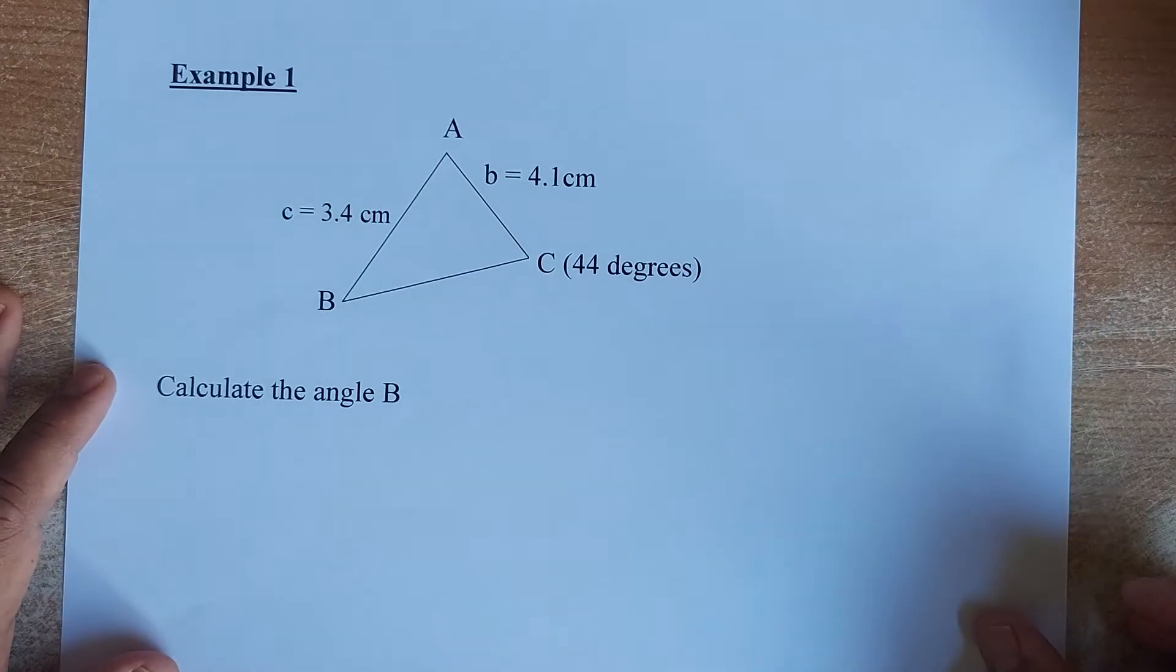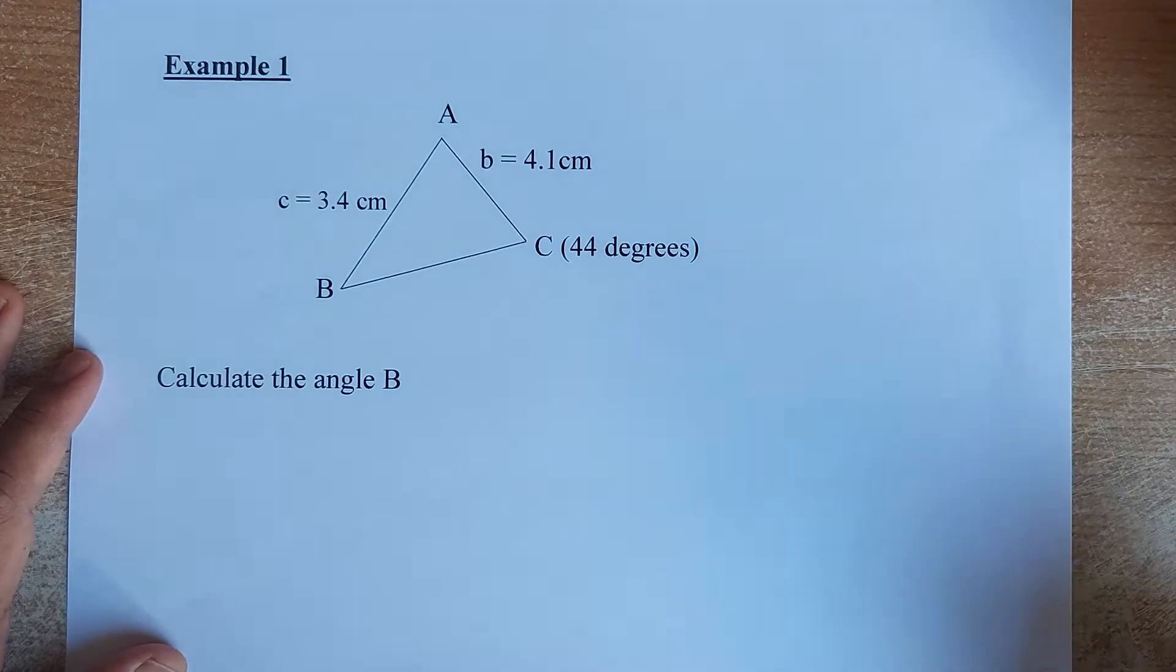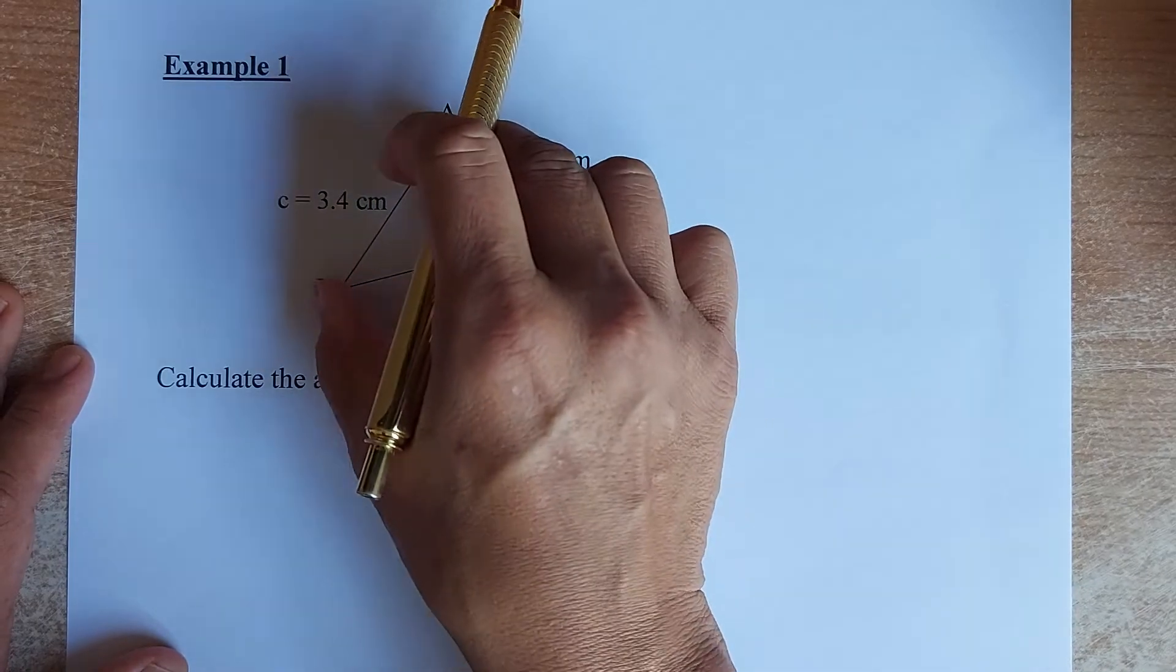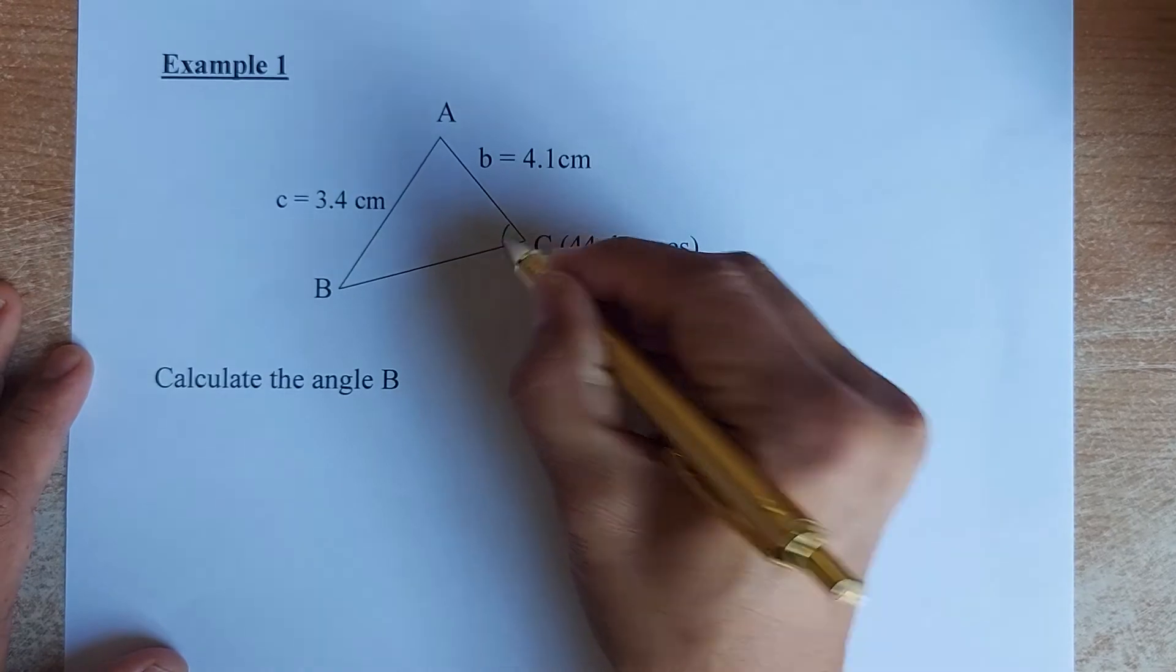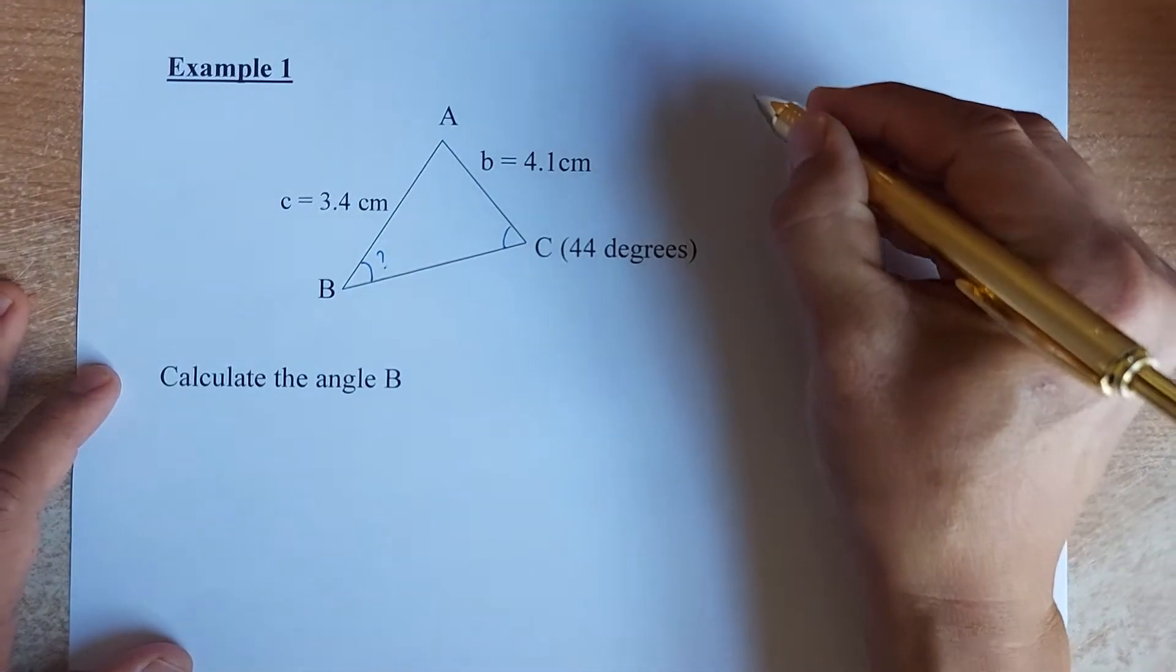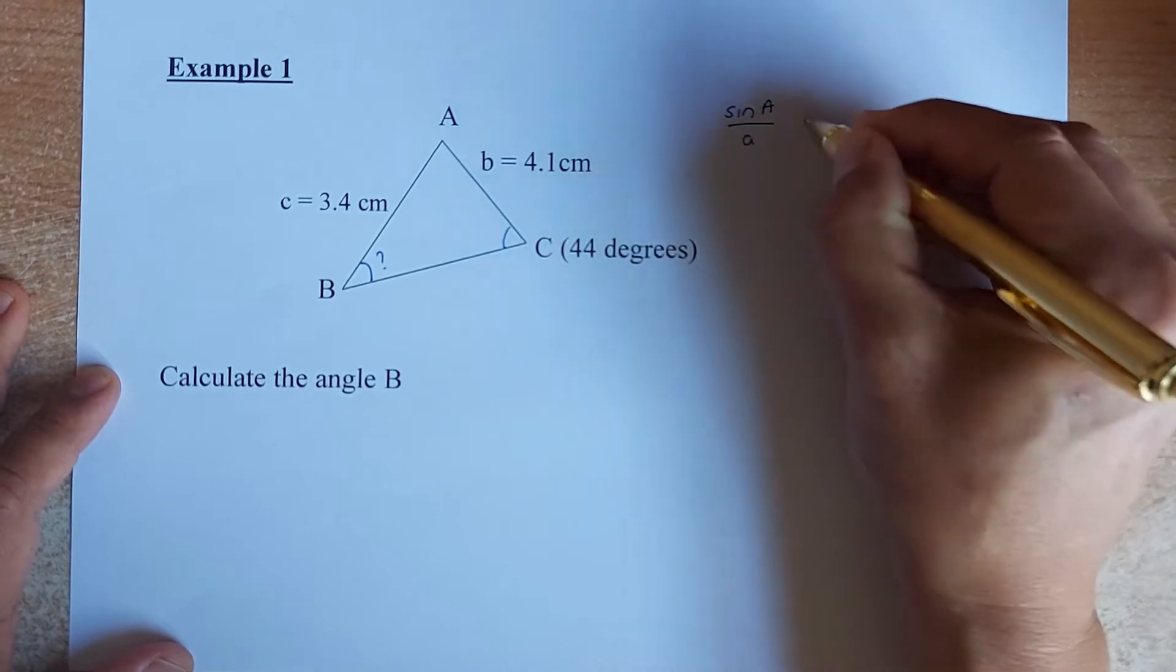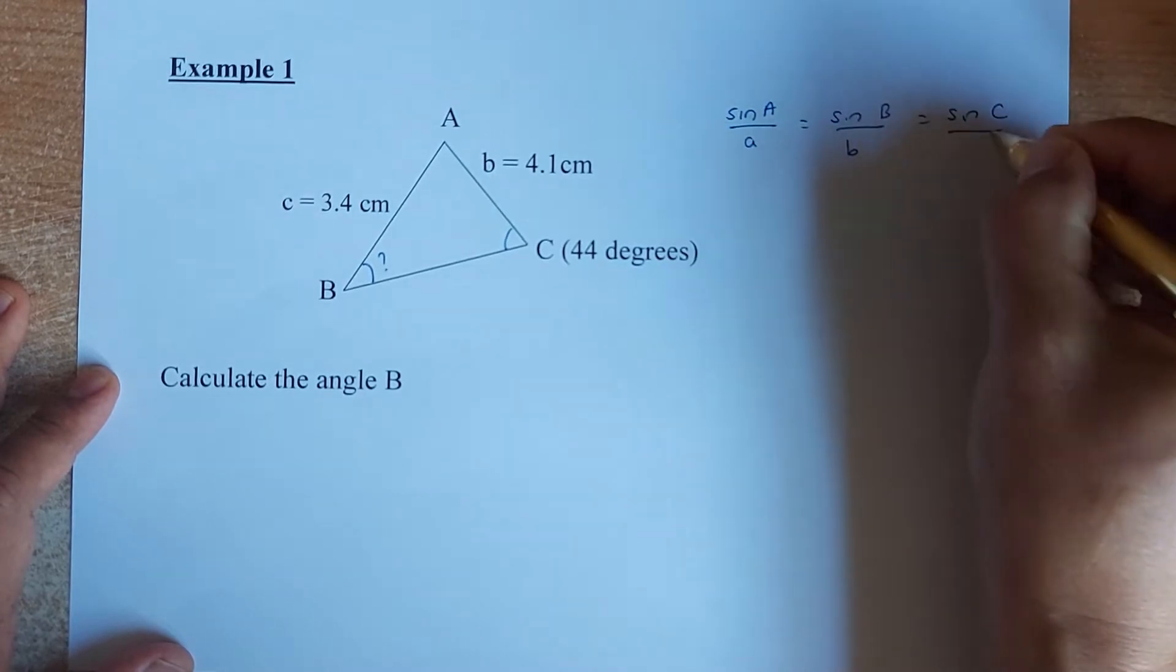So if you know this, we shall look at the example now. Example 1 looks like this. So we have a triangle ABC. For sine rule or cosine rule, your triangle does not need to be a right angle triangle. So now, if AB is 3.4, AC is 4.1 and angle C here is 44 degrees, we want to calculate angle B. So how we do that?